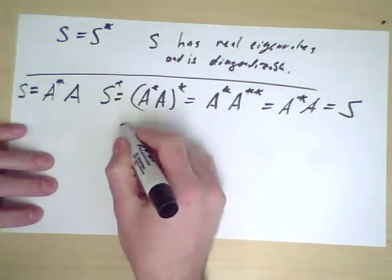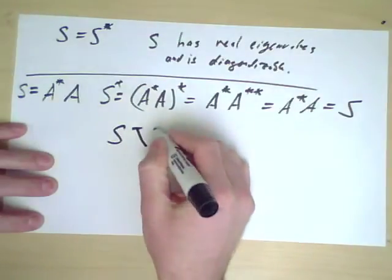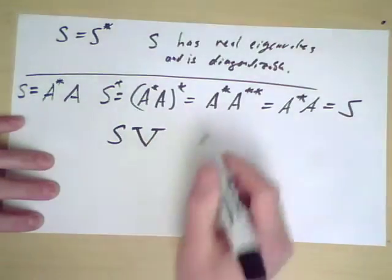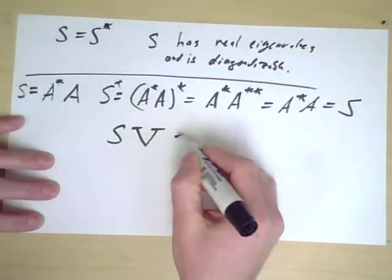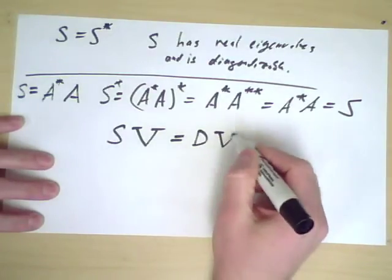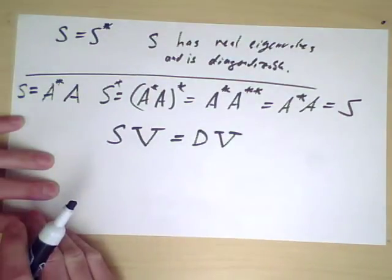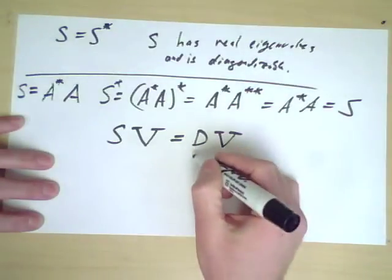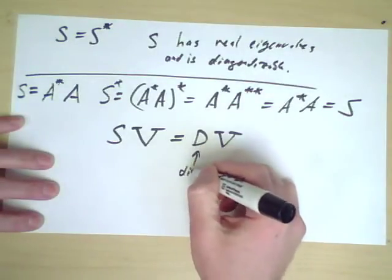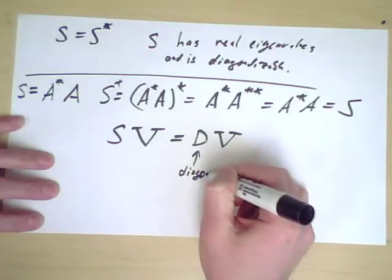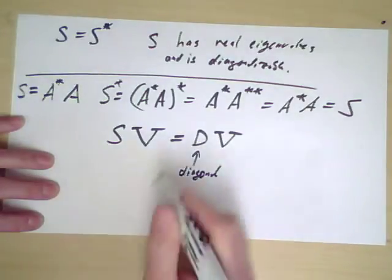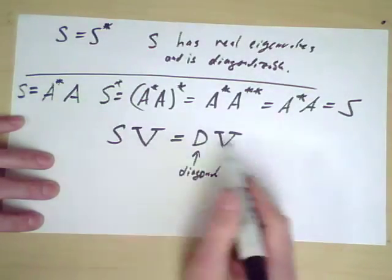That means that there's some basis of vectors V such that SV is DV, where D is diagonal containing the eigenvalues and V is the eigenvectors.